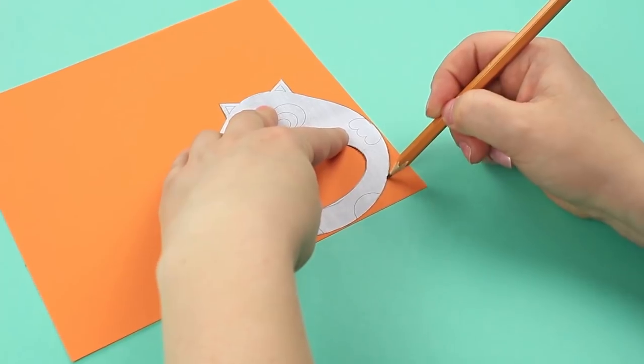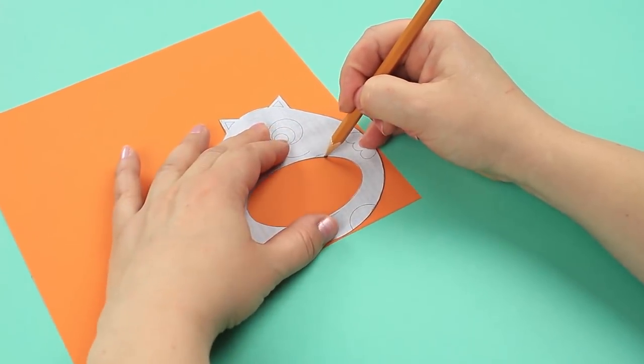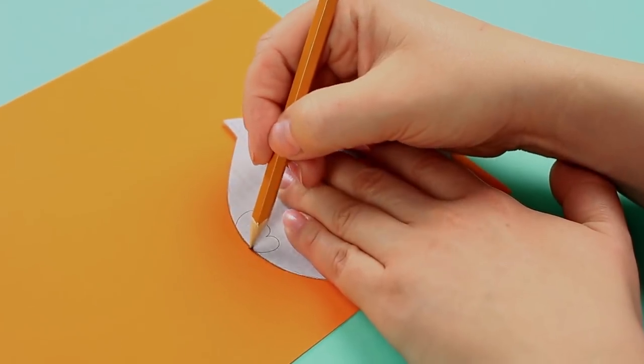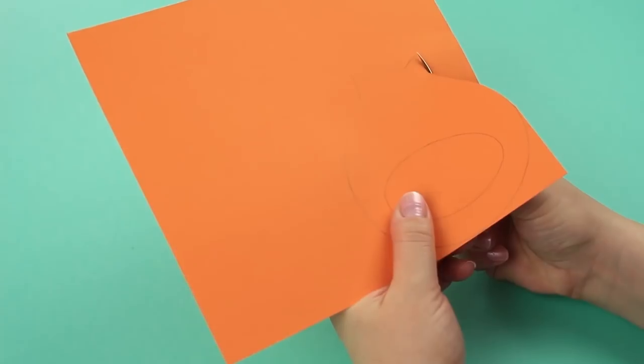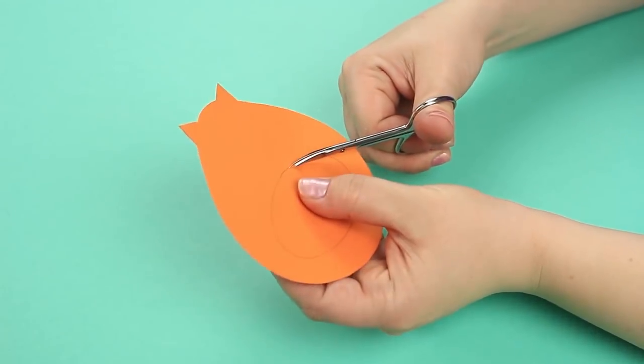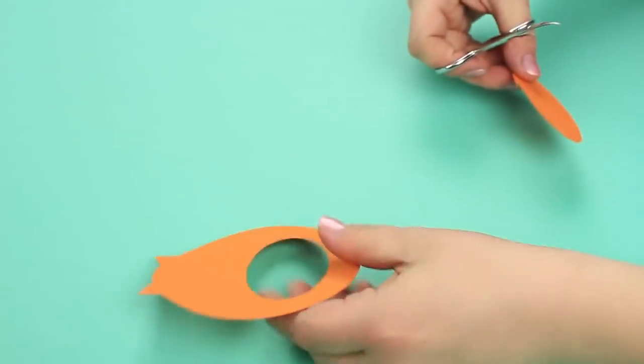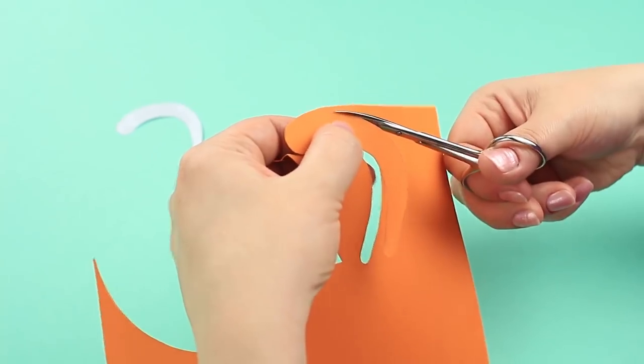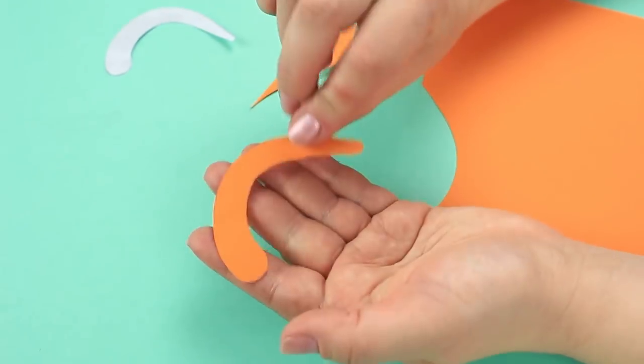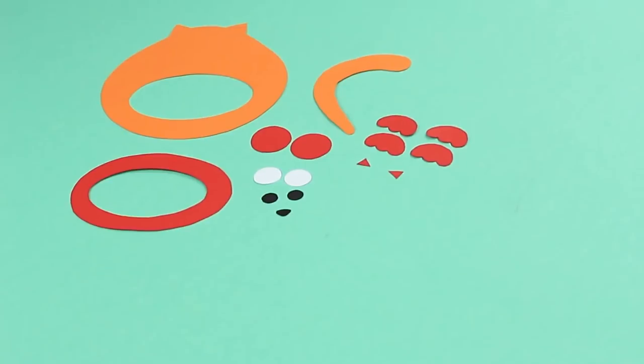Make the basic details. Start with an orange body. Trace the pattern, cut it out. Make an oval-shaped hole in the belly. Cut out other pattern details.